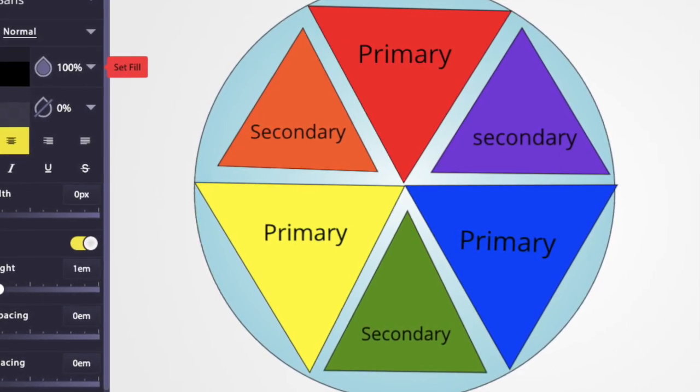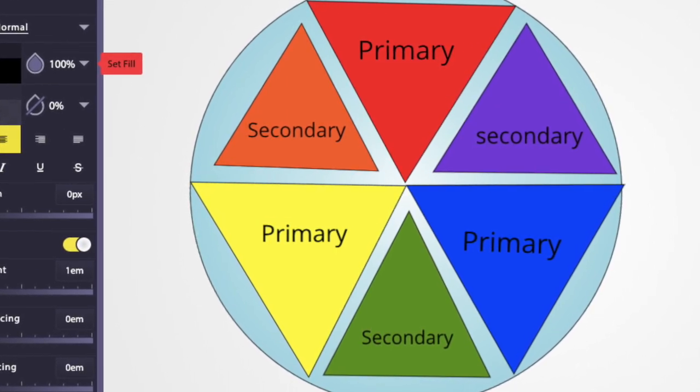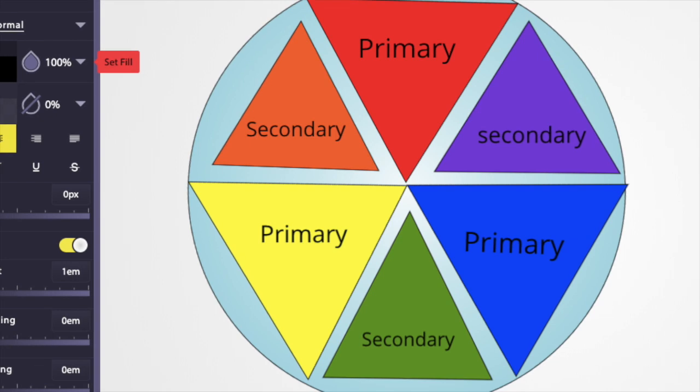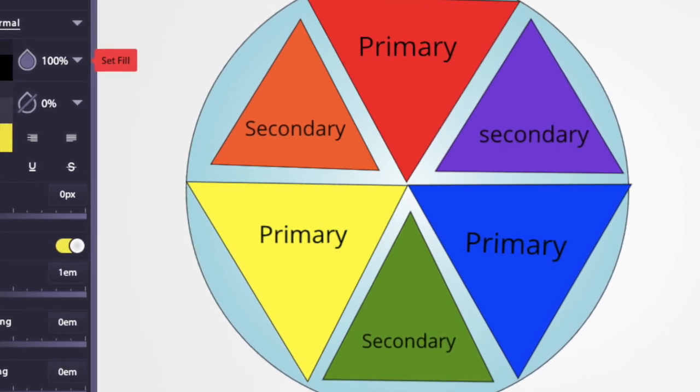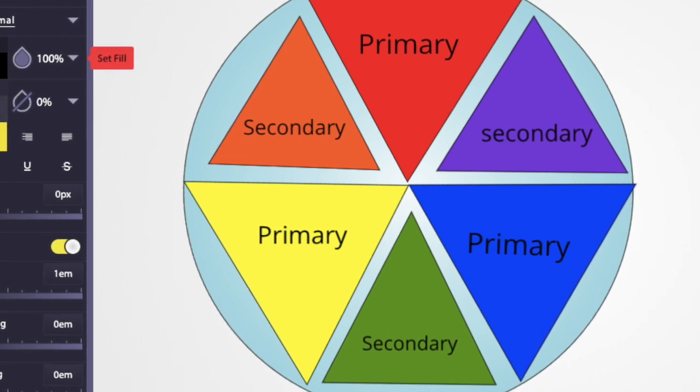You can use whatever shapes you want. I use triangles within a circle, but you could make yours out of circles, whatever shapes you want to do. It just has to be a color wheel with the primary and secondary colors. Okay, so that's just for third grade. Third grade, that is your assignment.